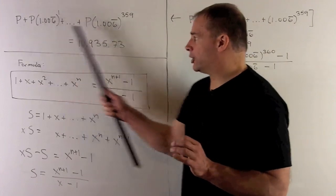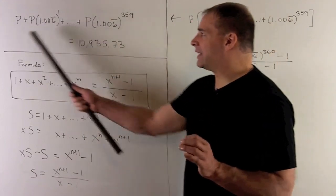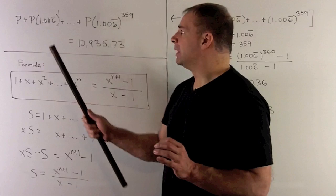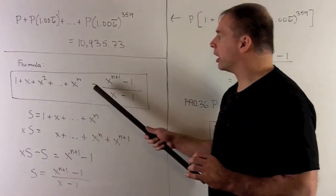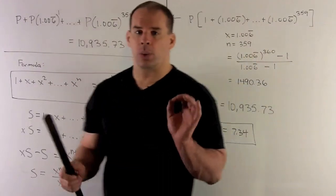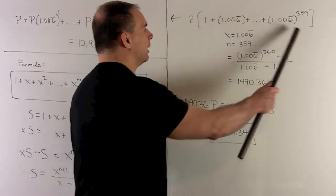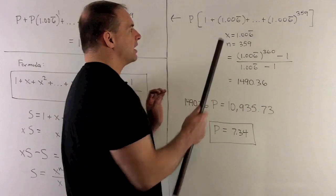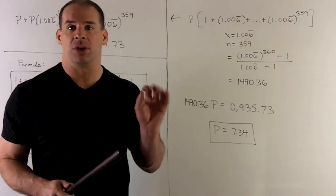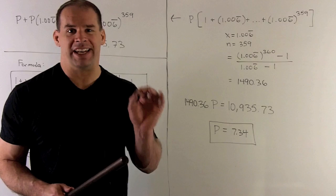Now, in the equation we're trying to solve, on the left-hand side, we can factor out a p. And then we're going to have an expression that looks like our term here. So what we're going to get is we'll have p times this sum here. We'll have x is equal to 1.006 repeating. n is going to be equal to 359.